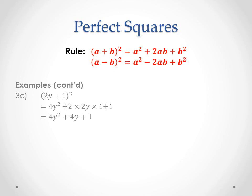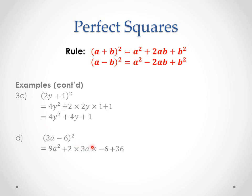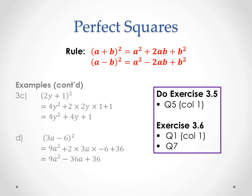For 3a minus 6 all squared: the middle term will be negative. The first term squared — 3a all squared — is 9a squared. The last term squared — negative 6 squared — is positive 36. And the middle part: 3a times negative 6 times 2 simplifies to negative 36a. So we get 9a squared minus 36a plus 36. Have a go at the questions listed in your work plan. If you're still unsure, do it the long way first, then use the shortcut and check you get the same thing.